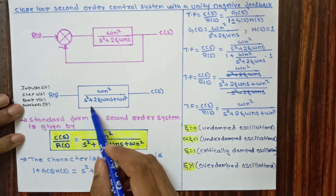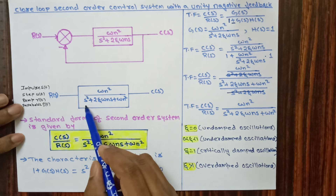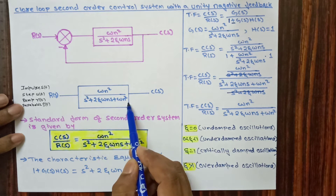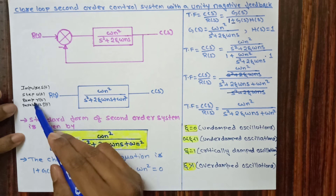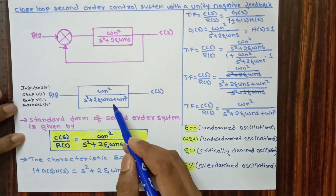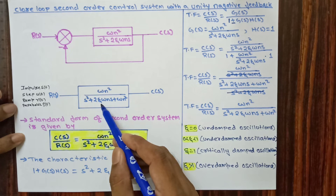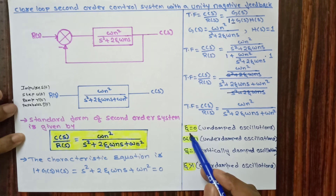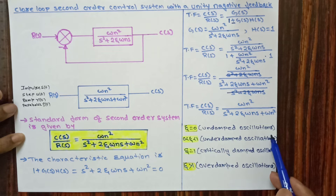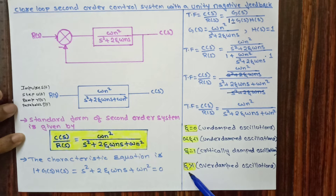This is the closed loop transfer function of the second order system: omega_n squared / (s squared + 2*zeta*omega_n*s + omega_n squared). Applying different inputs like impulse, step, ramp, and parabolic will give different outputs with respect to time. The output also changes with respect to zeta values: zeta=0 gives undamped oscillations; 0<zeta<1 gives underdamped; zeta=1 gives critically damped; zeta>1 gives overdamped oscillations.